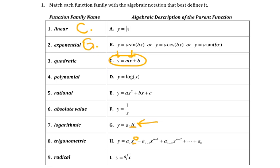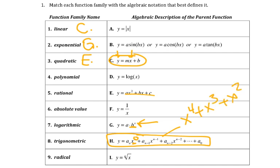Quadratic — that's where you have x squared, so it would be e. For a polynomial, basically what it says is anything above a cube, like something to the fourth, to the fifth, or so on — that's polynomial. Or if that's polynomial.